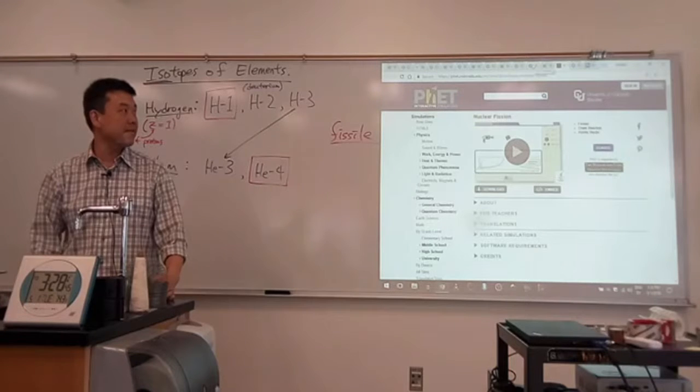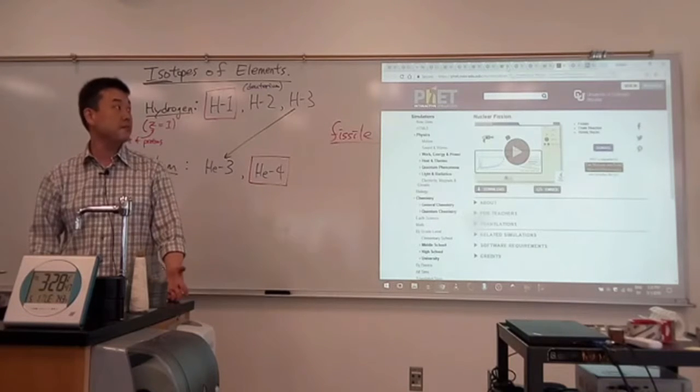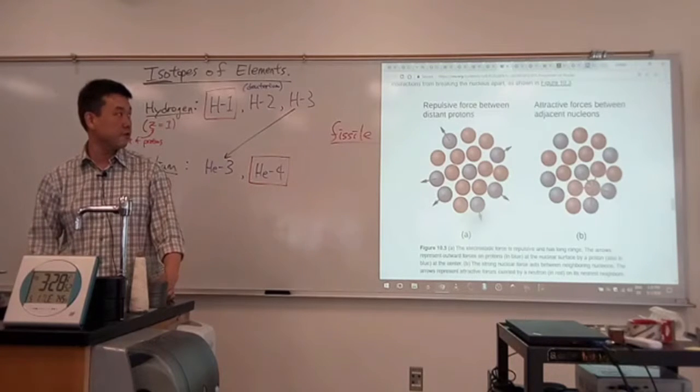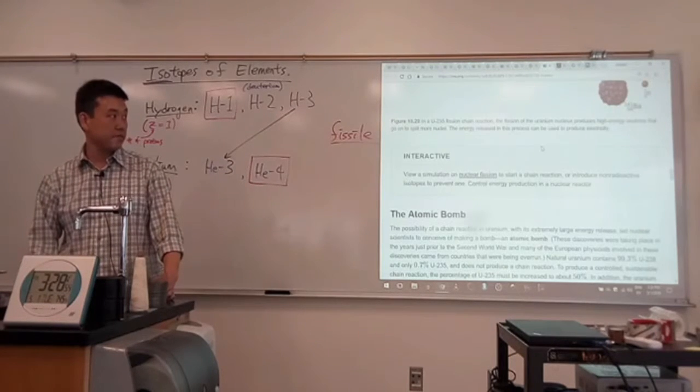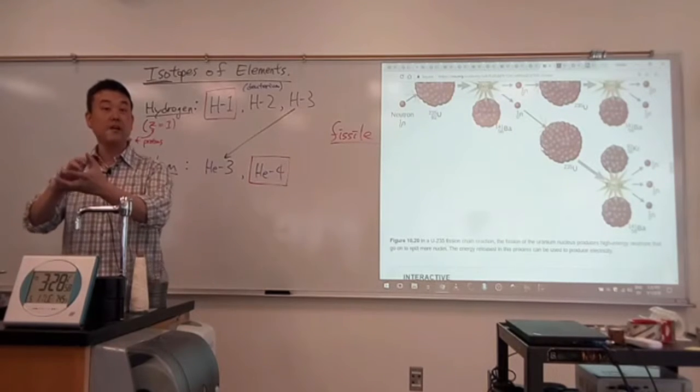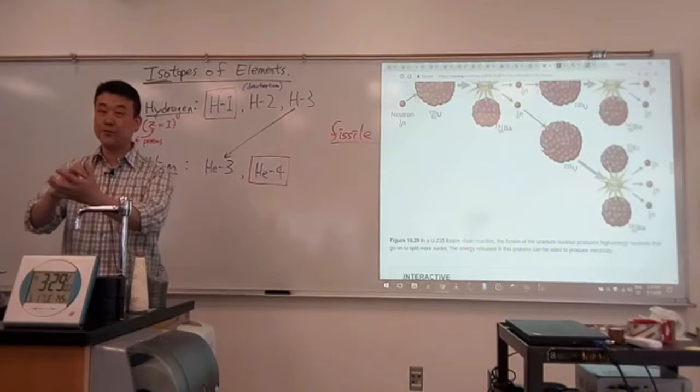So that was a big part of the Manhattan Project, where that's the part that scientists would work on. The scientists, like Feynman, they would work on that calculation part of, well, how big a piece of uranium-235 do you need for it to be a critical mass, and it's going to go kaboom.